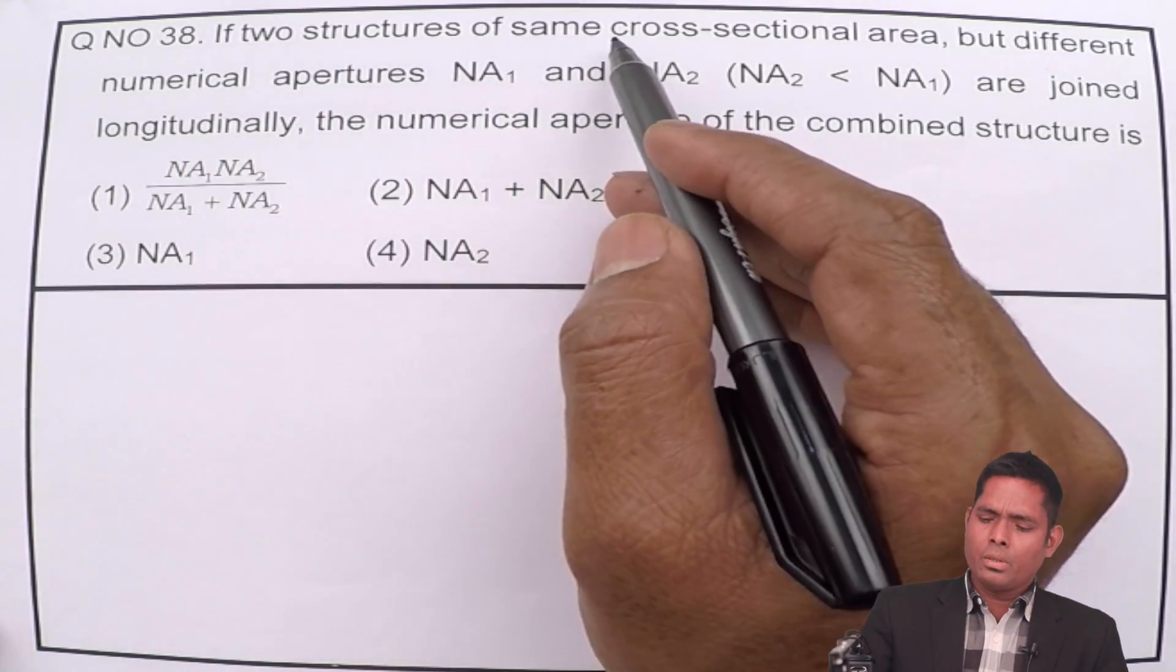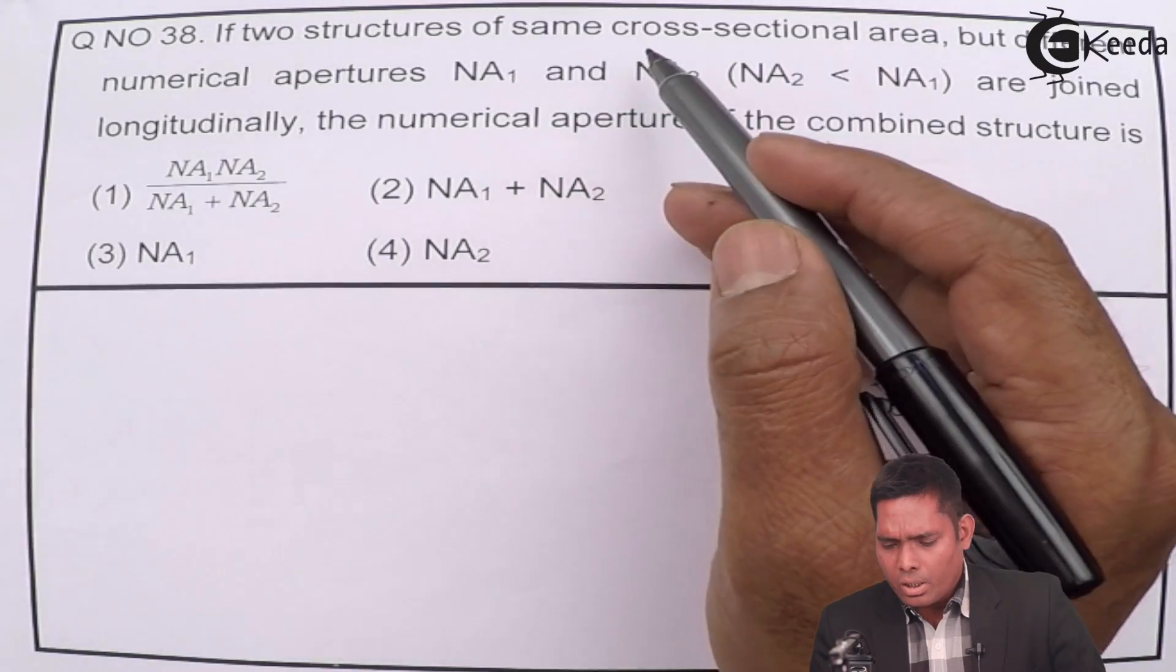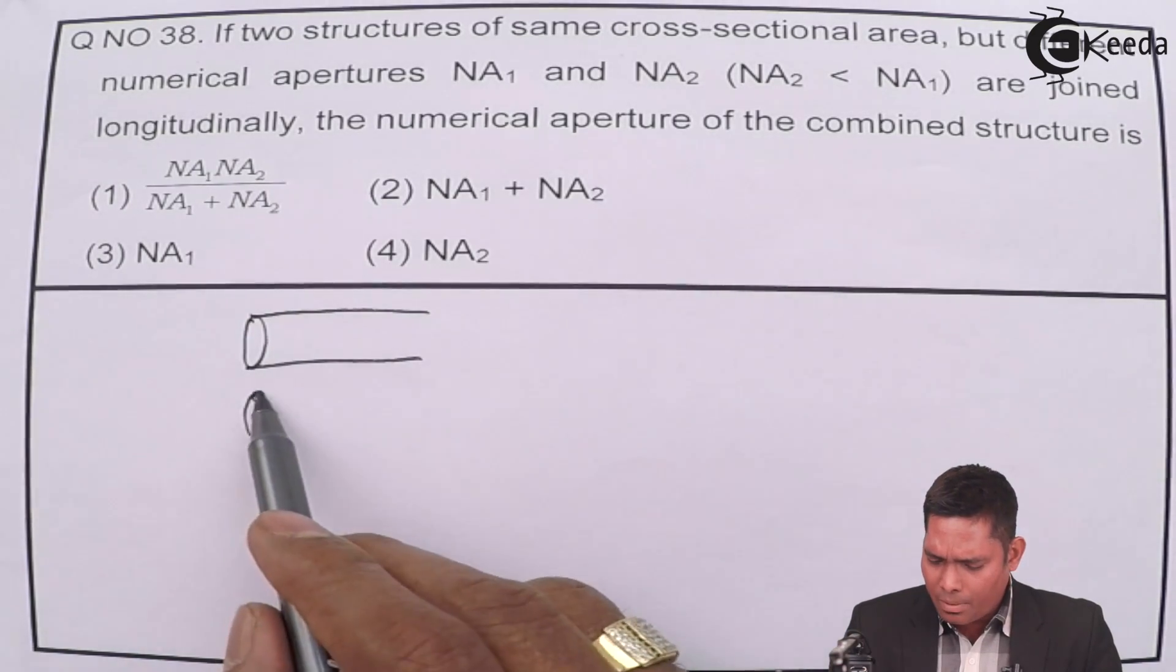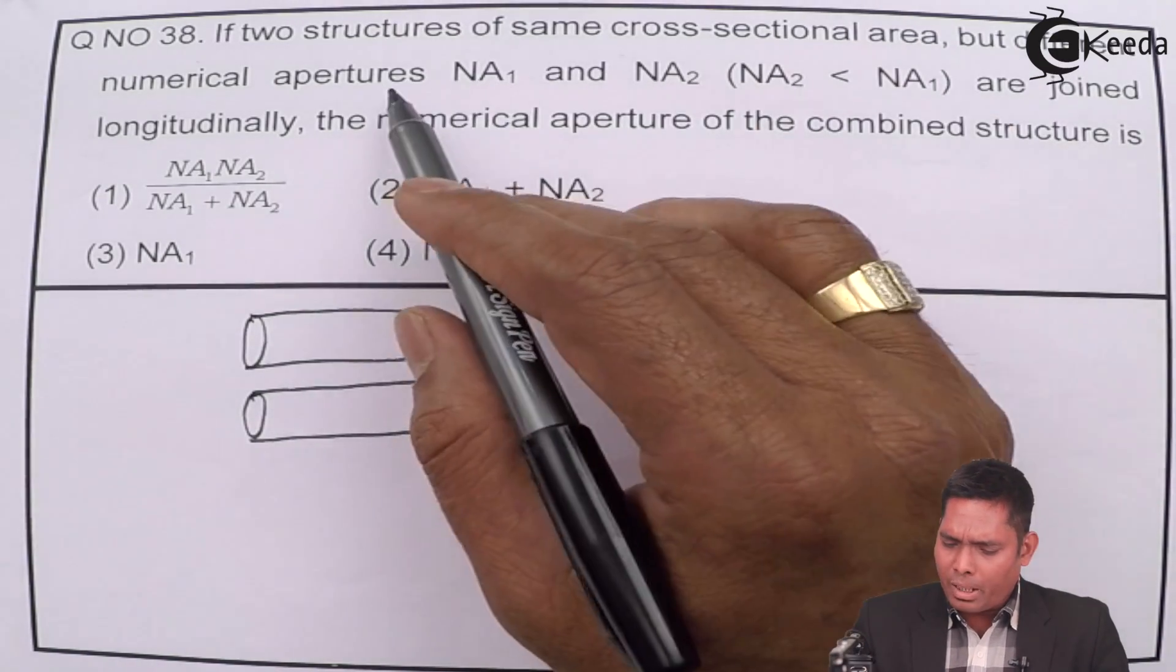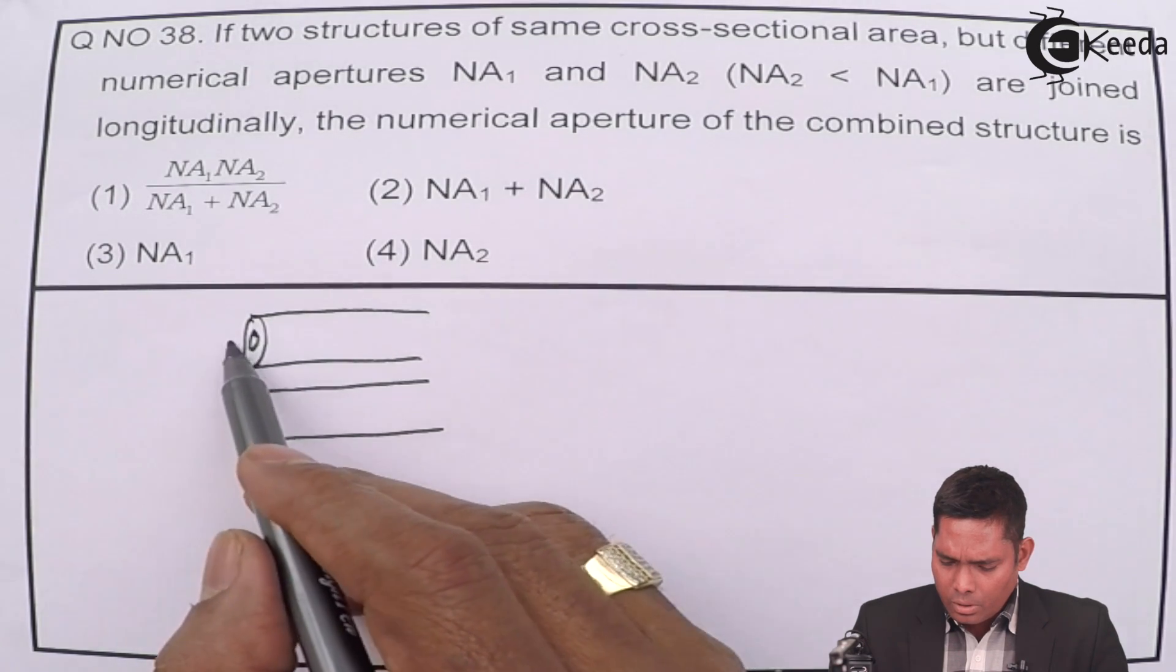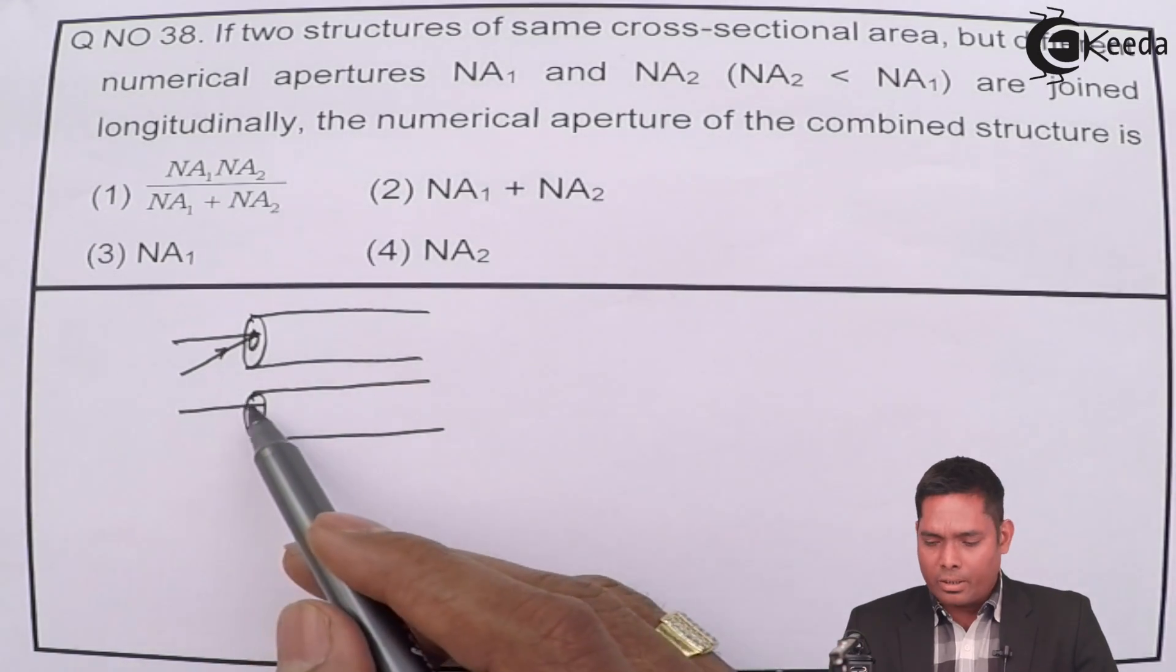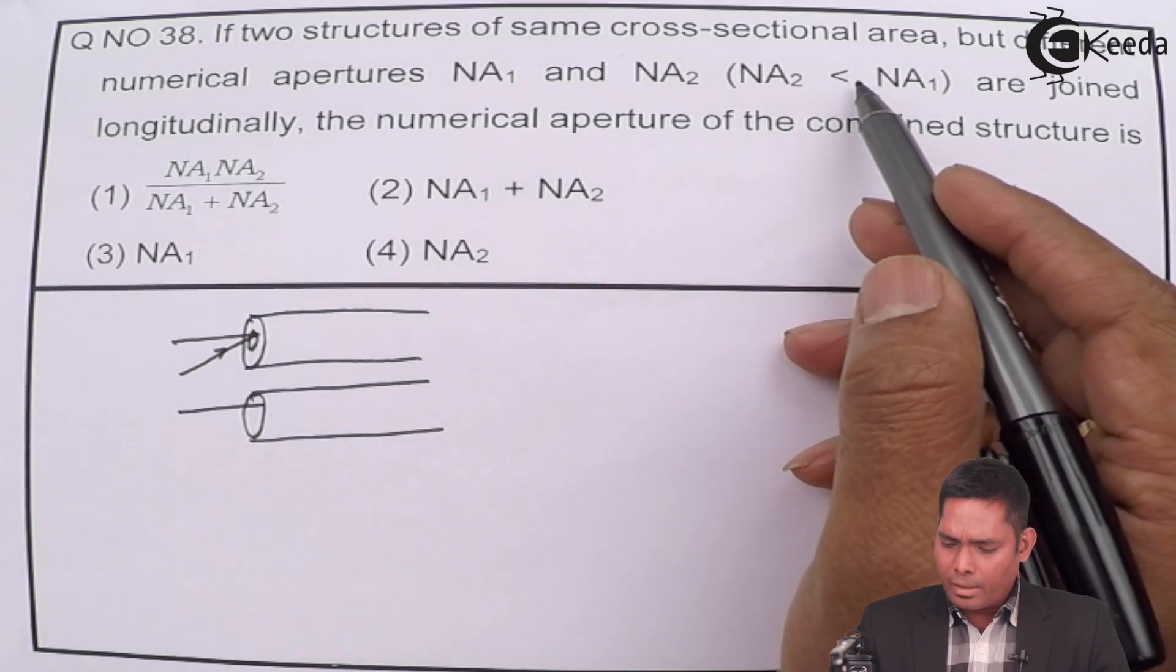If two structures of same cross-sectional area, but different numerical apertures NA1 and NA2, where NA2 is less than NA1, are joined longitudinally, the numerical aperture of the combined structure is...